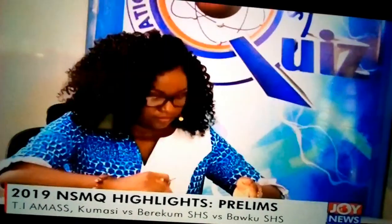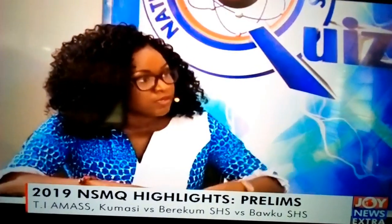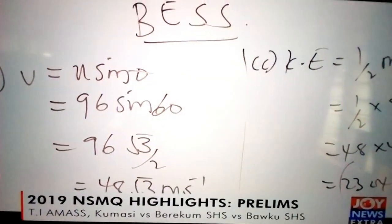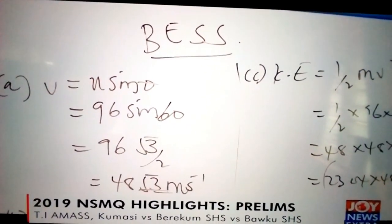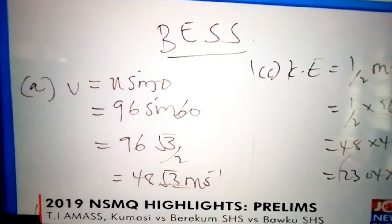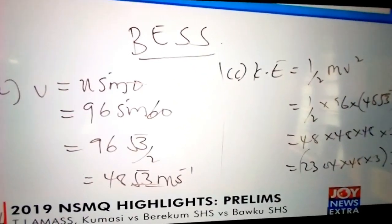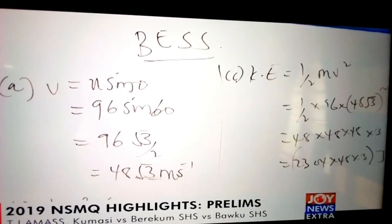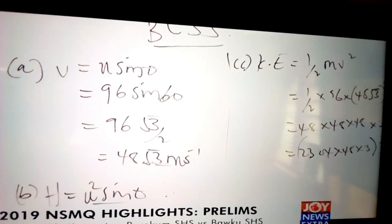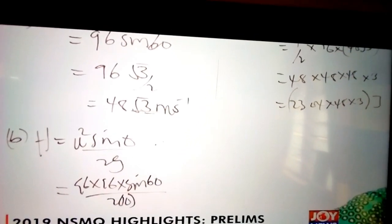Starting with Brecum Senior High School — they put out the formula finding the vertical component as v sine of the angle, so 96 multiplied by sine 60. Sine 60 is root 3 over 2, giving an answer of 48 root 3 meters per second. Going further, that gives you 83 meters per second. They will have 3 marks for Part A.